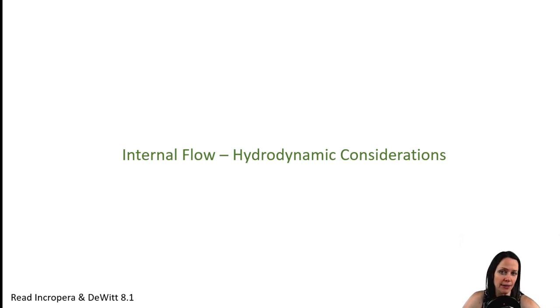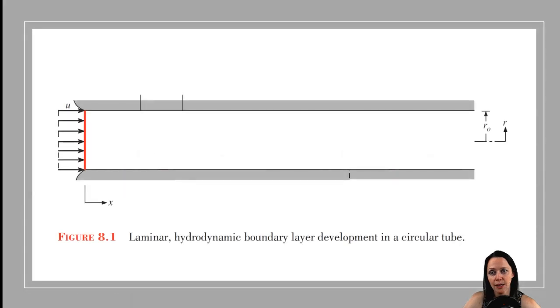Let's start by just thinking about the hydrodynamic considerations before we start thinking about heat transfer. Let's look at flow in a circular pipe in which flow is going from the left to the right. On the left, we see that the fluid is entering the tube at some uniform velocity u, and as soon as the fluid enters the tube, it makes contact with the wall of the pipe, and you can see how that changes the velocity profile.